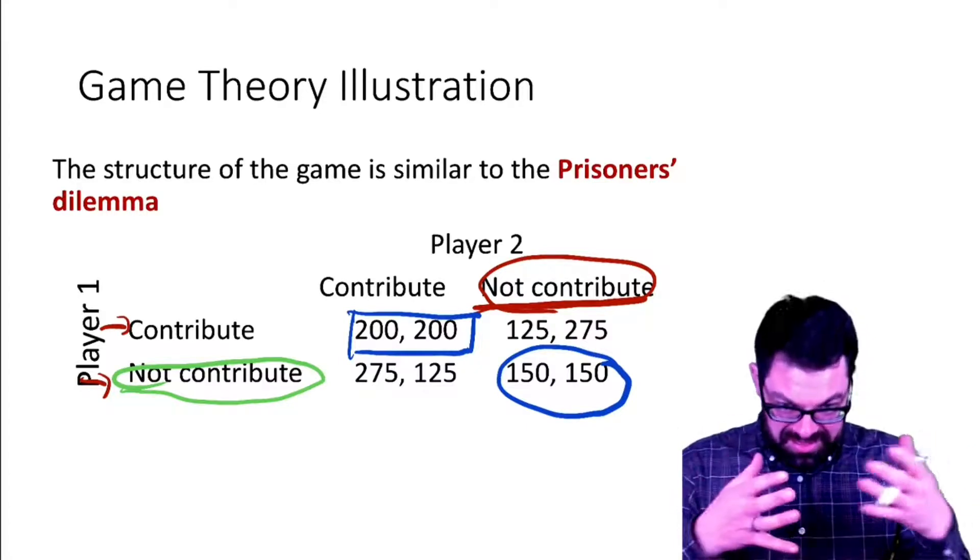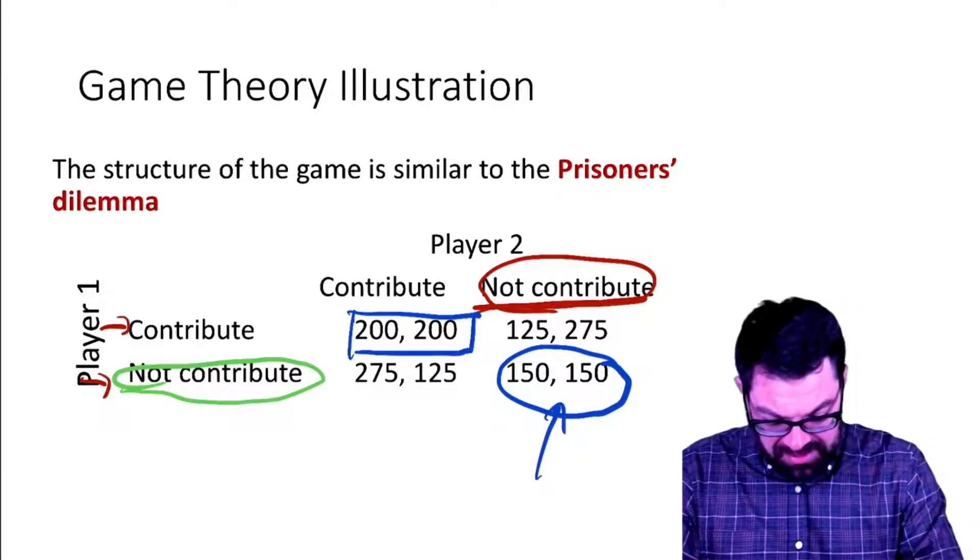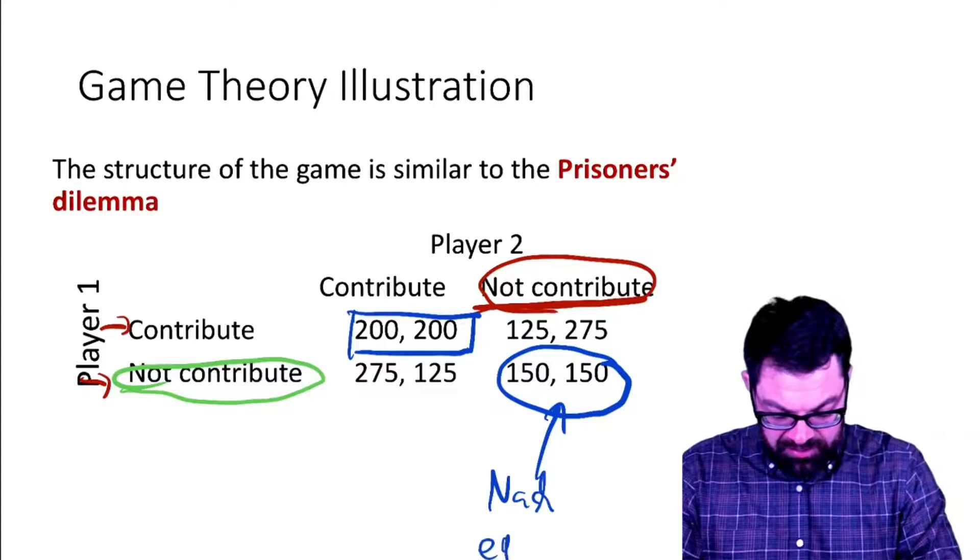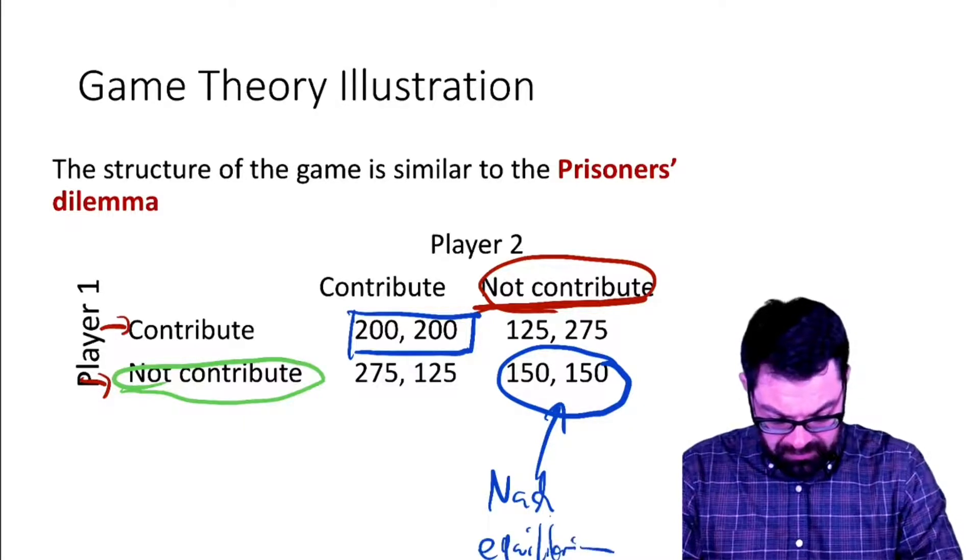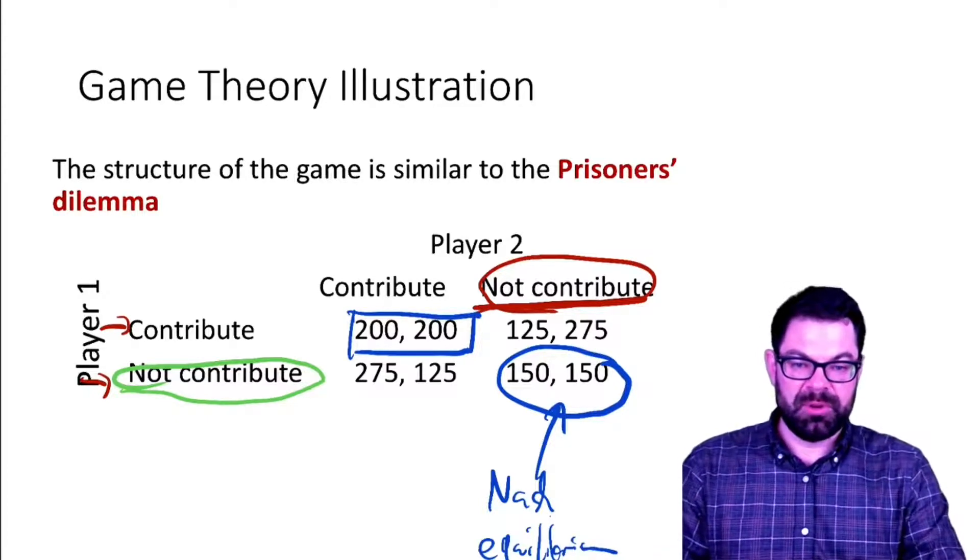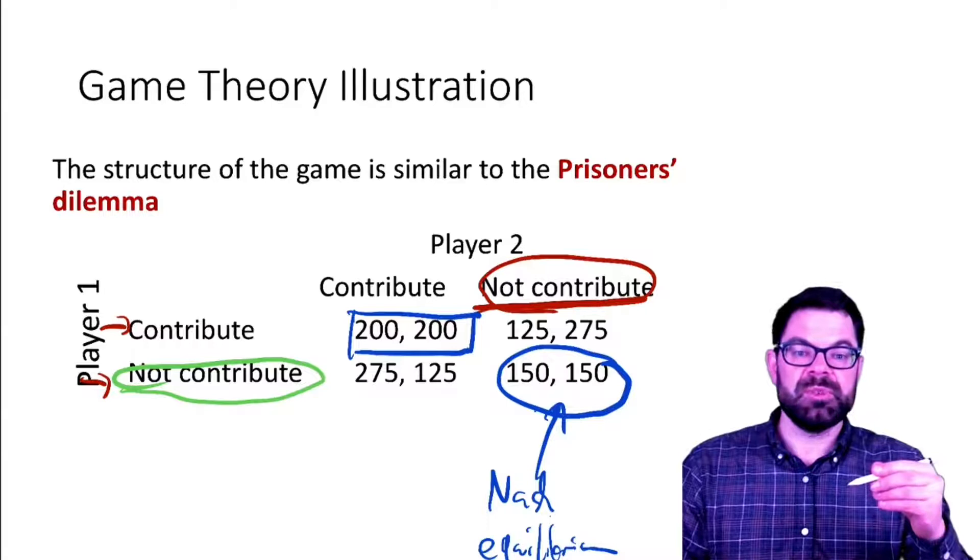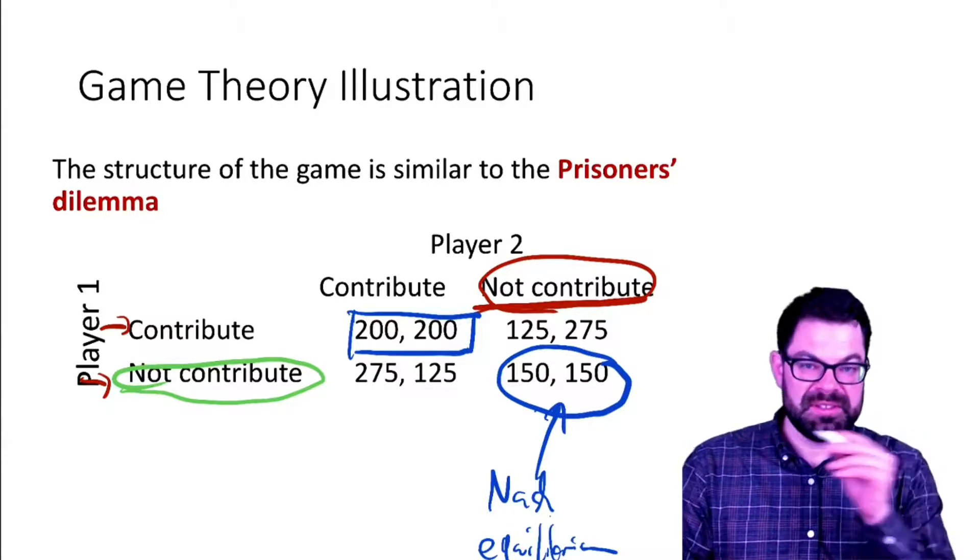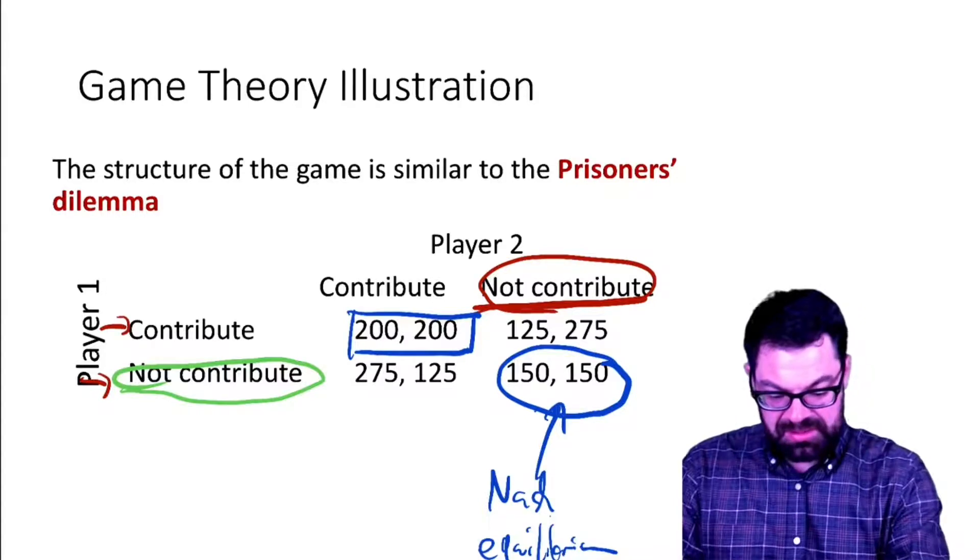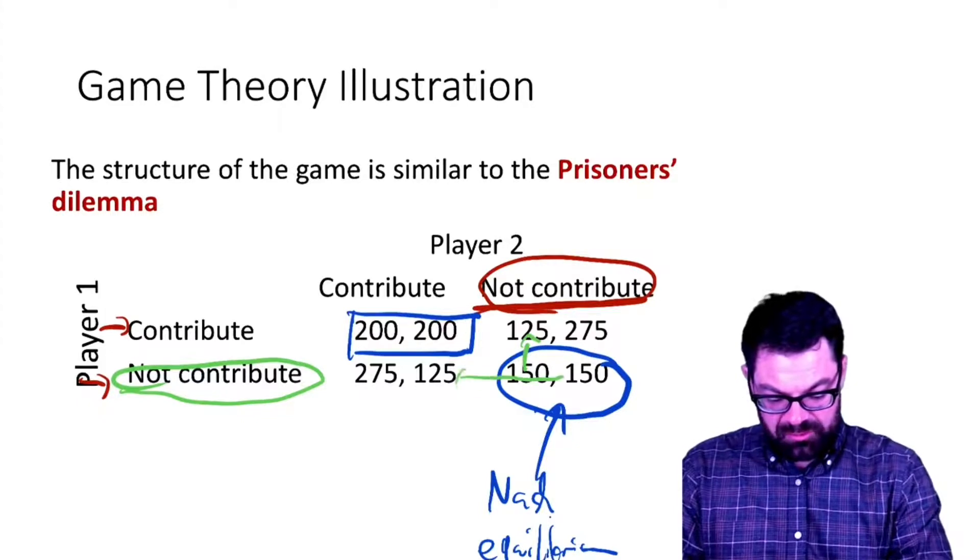From this equilibrium, which is a Nash equilibrium, no one has an incentive to deviate. For player one, if they decide to contribute they would actually worsen their position from 150 to 125, and the same for player two. Player one has no incentive to move up here and player two has no incentive to move over here.